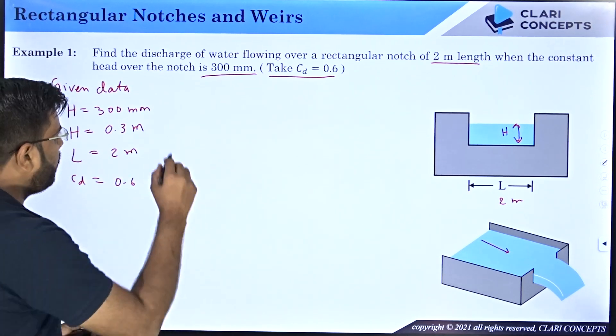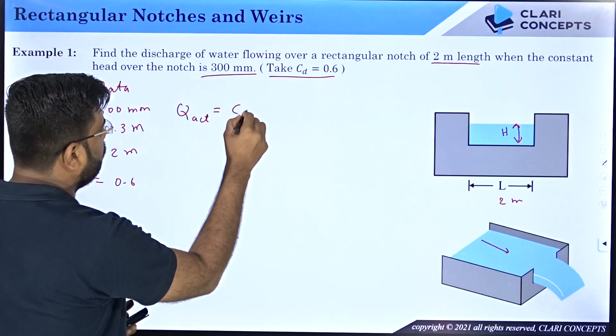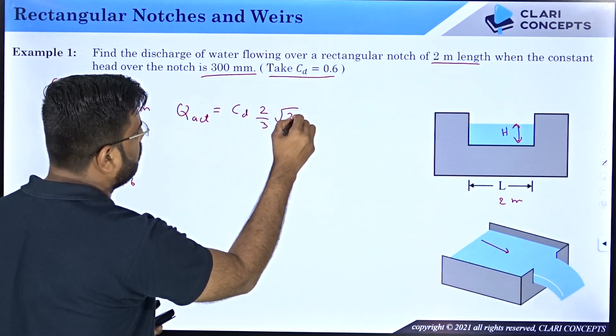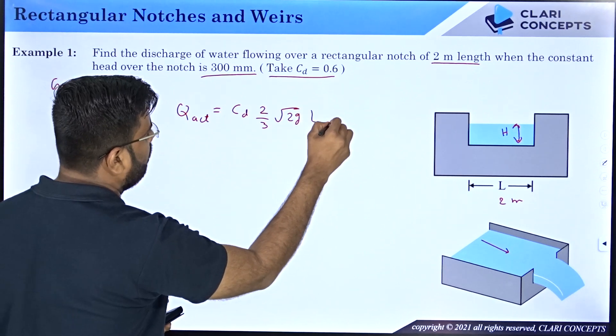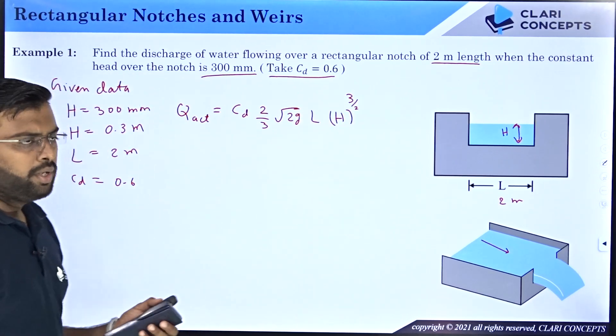Very simply, if you want to calculate the flow rate, the formula says that Q actual is equals to CD into 2 by 3 under root 2G into L into H raise to 3 by 2, simple right.